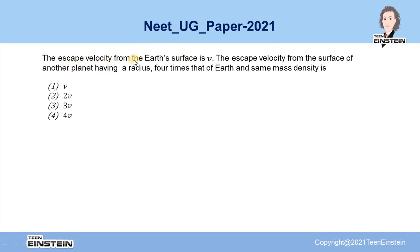The problem says the escape velocity from the Earth's surface is given as V, and you have to find out the escape velocity from the surface of another planet which has a radius four times that of the Earth and has the same mass density. There are four options given and you have to find out the correct one.